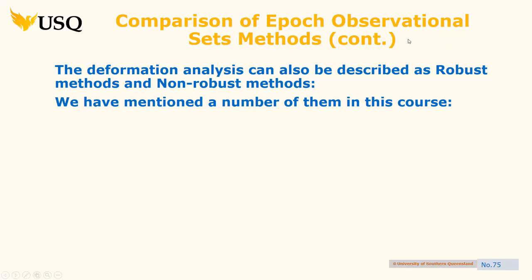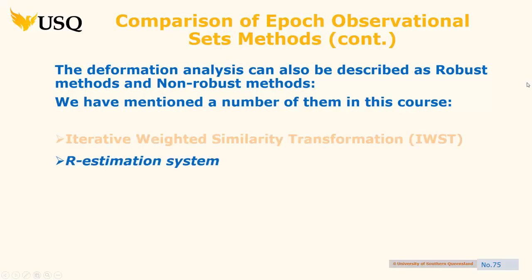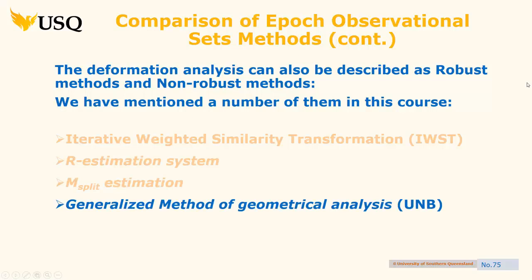There are models for comparing two epochs — robust methods and non-robust. Robust is a term used in error analysis that doesn't actually mean strong or not strong. These methods are all outlined in the study material; there are obviously many of them, and probably even more now.